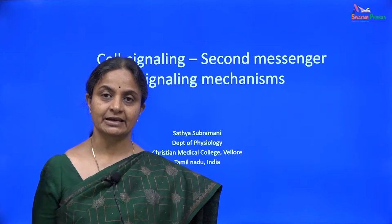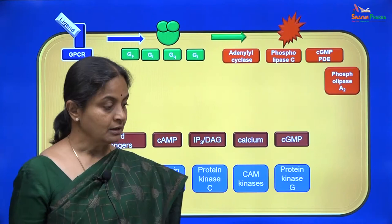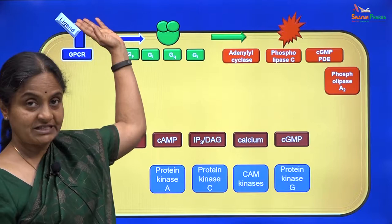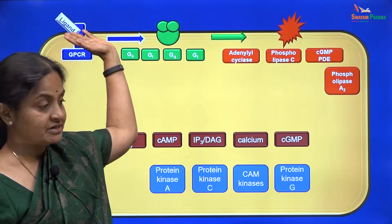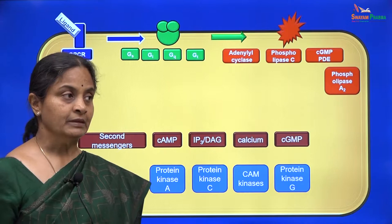The module in progress is cell signaling mechanisms and we are focusing on G protein coupled signaling mechanisms, which are also referred to as second messenger signaling mechanisms. The term second messenger is specifically used for these substances. The implication is that the ligand itself is the first messenger — the ligand stops at the membrane, binding to a membrane receptor, and produces its actions on the cell by elaborating one of these molecules which act as its second messenger.